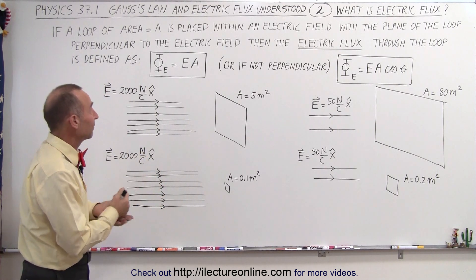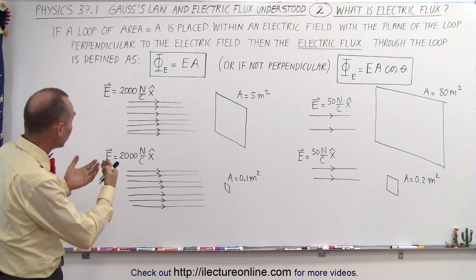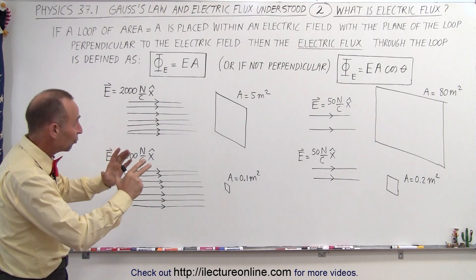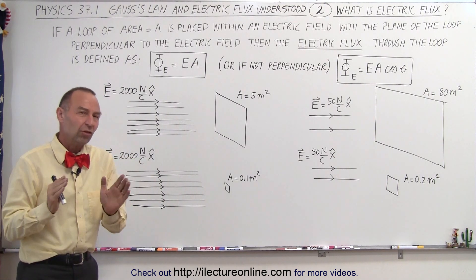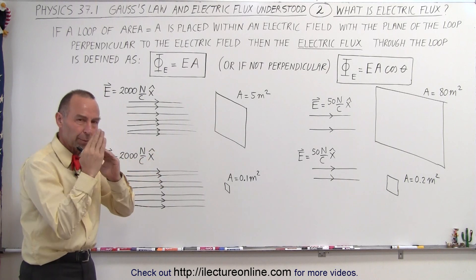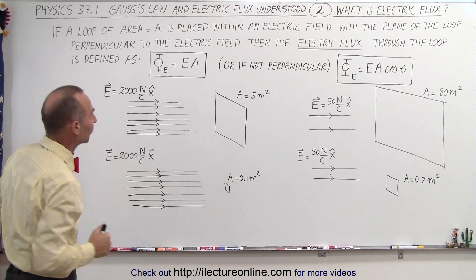let's again look at our initial definition, where we said that if we have a loop of area A which is placed within an electric field in such a way that the area of the loop is perpendicular to the direction of the electric field,